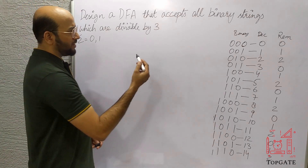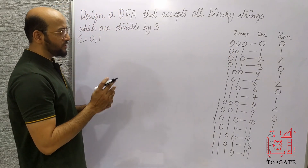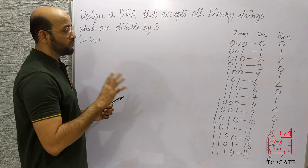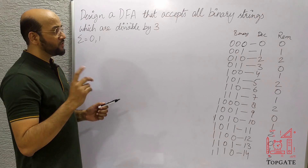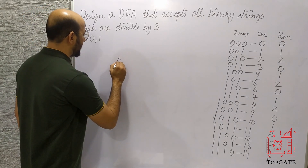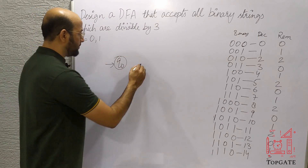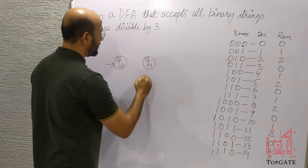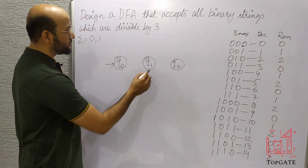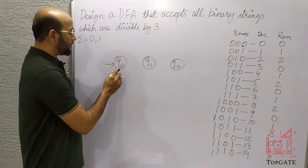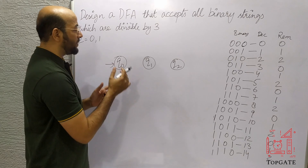The logic is that we will take three states. One state will be the state where the remainder is 0, one state where the remainder is 1, and one state where the remainder is 2. So we take state q0 where the remainder is 0, state q1 where the remainder is 1, and state q2 where the remainder is 2. Whenever we get a number whose remainder after dividing by 3 is 0, we come to q0.